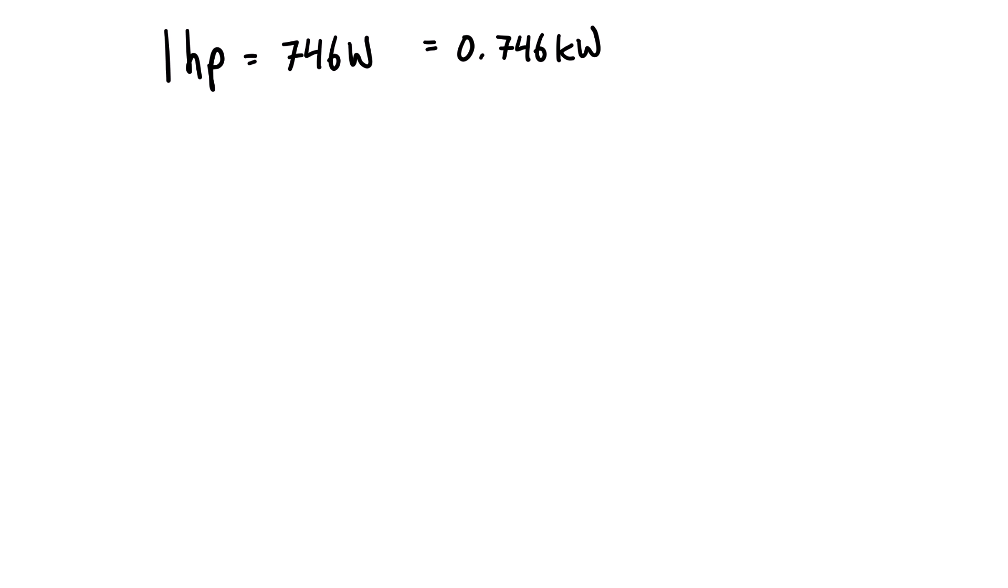So we can express this as unity by writing 1 hp over 746 watts equals 1. We could also write that in the inverse form, so we could have 746 watts divided by 1 horsepower, which is also equal to 1. Now we can multiply anything by unity and it's fine—it's just going to convert the units.